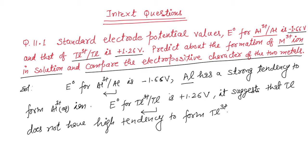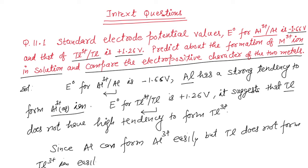Since aluminium can form aluminium 3 plus easily, but thallium does not form aluminium 3 plus, it means aluminium is more electropositive than thallium.